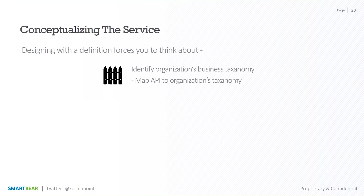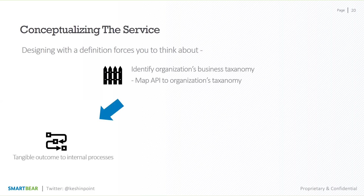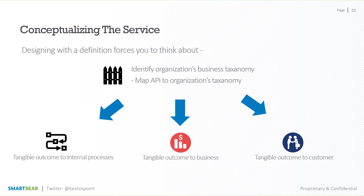Now when you start thinking about creating a new API, instead of going in and developing it further, designing the interface actually forces you to think about what are the different resources you're going to expose that touch on different aspects of your business taxonomy. You'll start to understand the intricate ways in which relationships form between these different systems. Once you've identified this, you start to think about how this API can bring tangible outcomes to your internal processes and to the business.